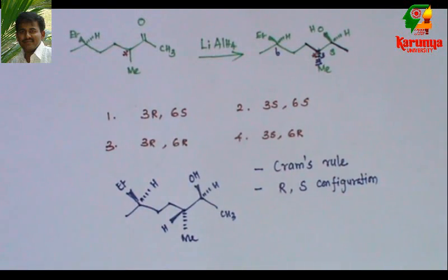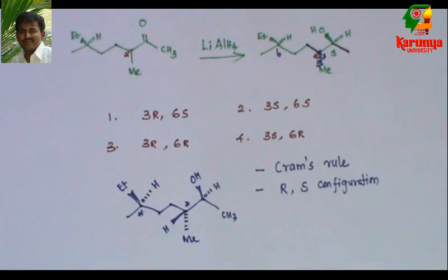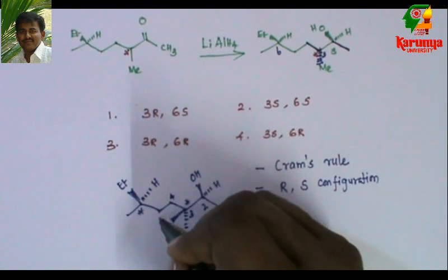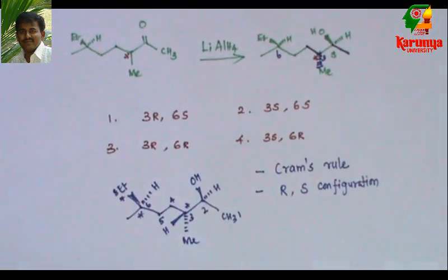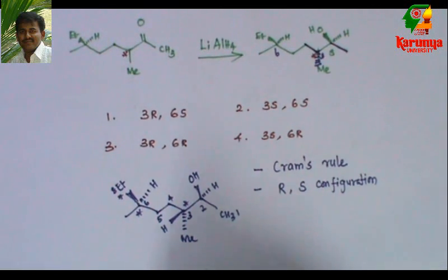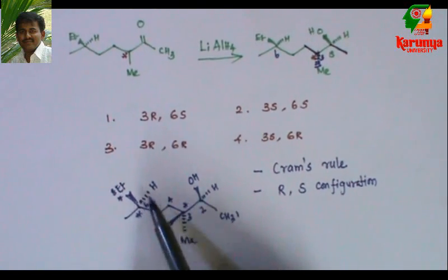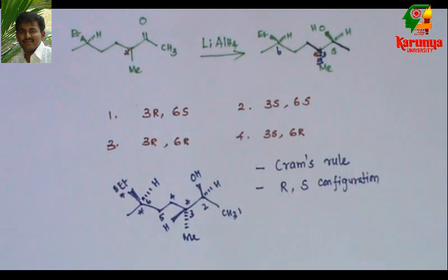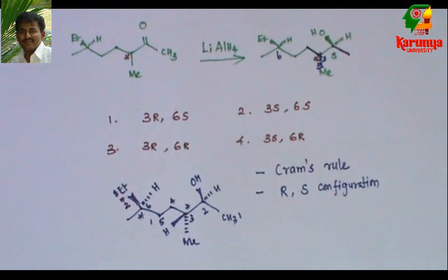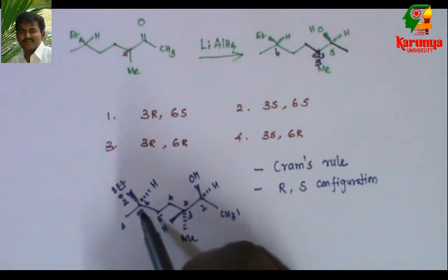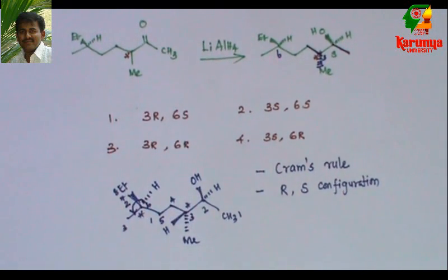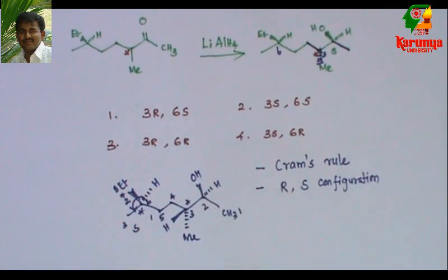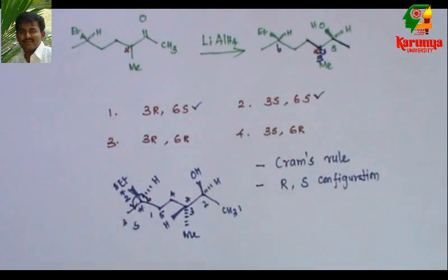Now, what about the configuration of this and this chiral centers? The numbering starts from here: 1, 2, 3, 4, 5, 6, 7, 8. In ethyl, there are two carbons. First I go for 6. Since the least priority is away from us, it will be somewhat easy to assign R and S configuration. The higher priority goes to this bulkier group, so 1, 2nd priority goes to ethyl and 3rd priority goes to methyl. So it is anticlockwise direction. Since the least priority is away from us, I go as such. So carbon 6 has S stereochemistry. So this and this is matching.